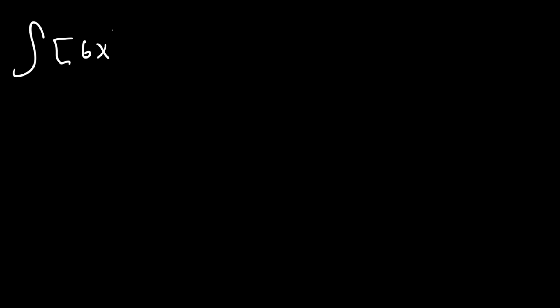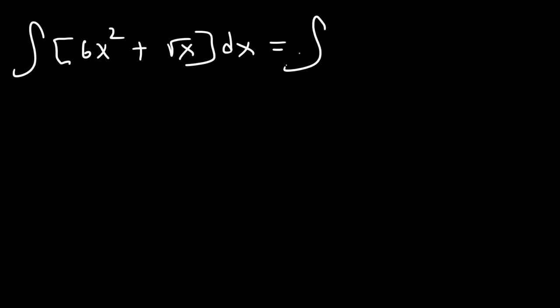Go ahead and determine the antiderivative of 6x squared plus the square root of x. The first thing I would recommend doing is rewriting the expression. The square root of x is x to the 1 half. Now let's use the power rule.